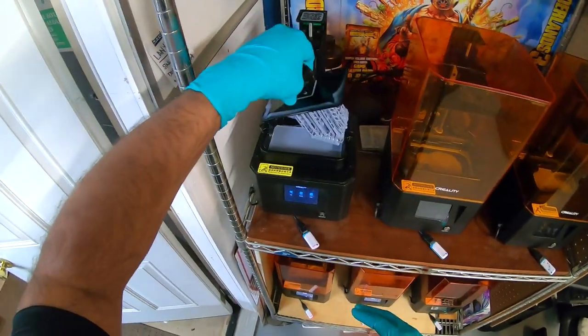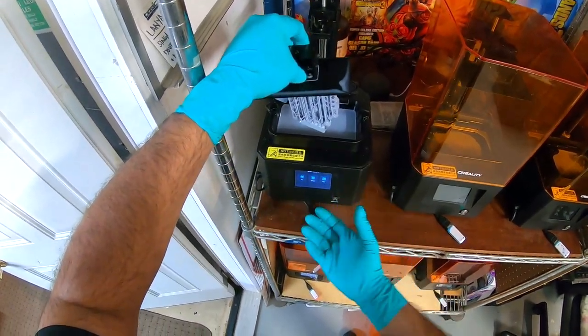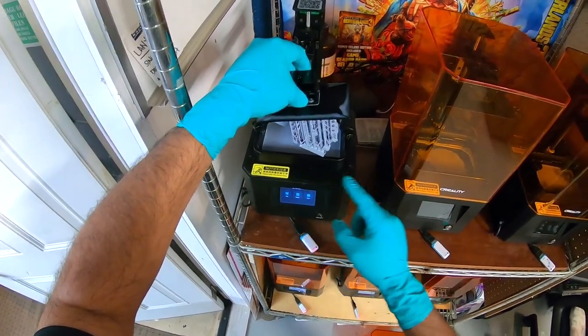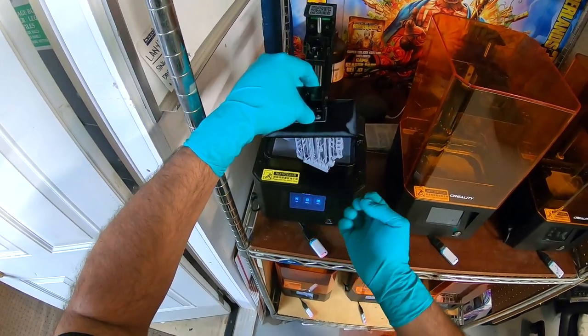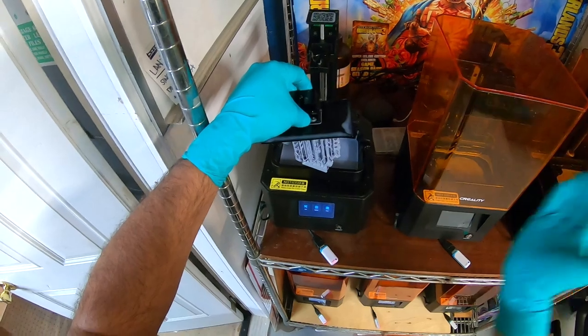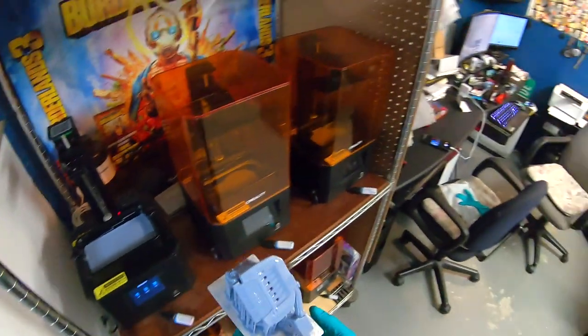So the way that this print works, this technology uses an LCD screen and a UV light. The screen opens up whatever pixel that needs light to go through. The UV light cures it for a certain amount of time. Once it's done, it blocks the light out, goes back up and repeats the process thousands of times.